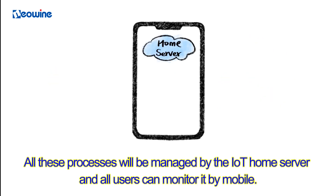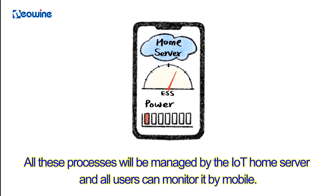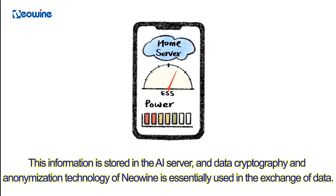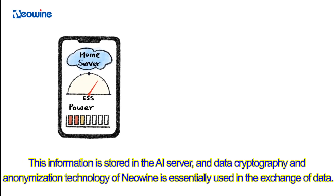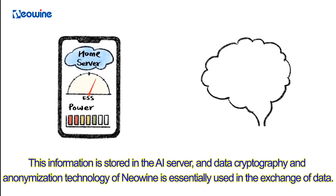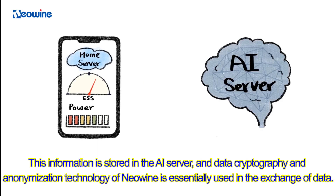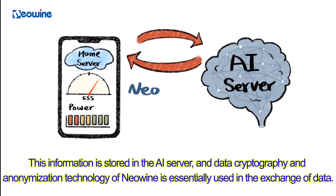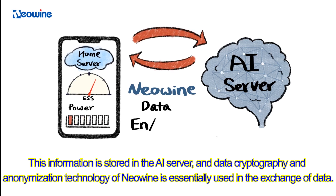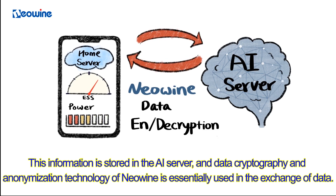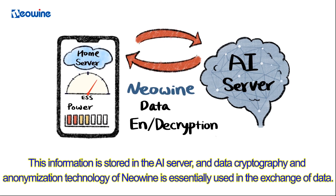All of these processes will be managed by the IoT home server, and all users can monitor it by mobile. This information is stored in the AI server, and data cryptography and anonymization technology of Neowine is essentially used in the exchange of data.